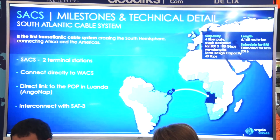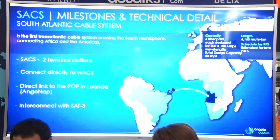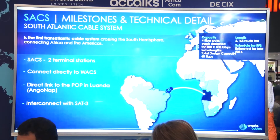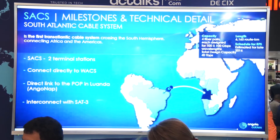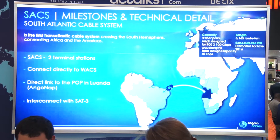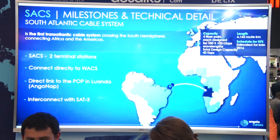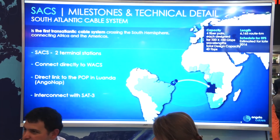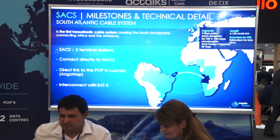The SACS system is a system from Angola Cables between Sangano and Fortaleza, with two landing points: the landing point in Sangano and the other in Fortaleza. And Monet is another submarine system. It starts in Santos, lands in Fortaleza, and goes to Miami in Boca Raton.